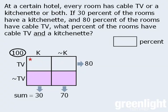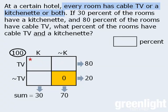Now, there is one last piece of information that we can add to our diagram, and if we fail to spot it, then we cannot answer this question correctly. What can we do with the information that tells us every room in the hotel has cable TV or a kitchenette or both? Well, since every room has at least one of these features, this box here, which represents rooms with neither cable TV nor a kitchenette, must contain zero rooms.